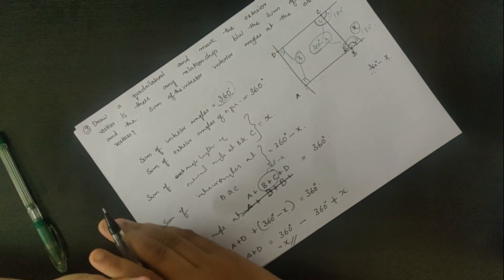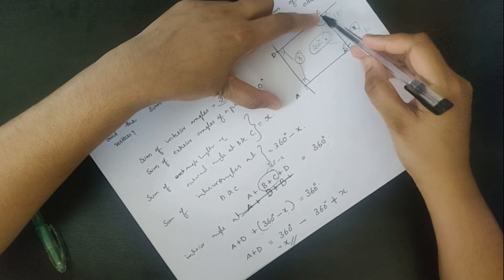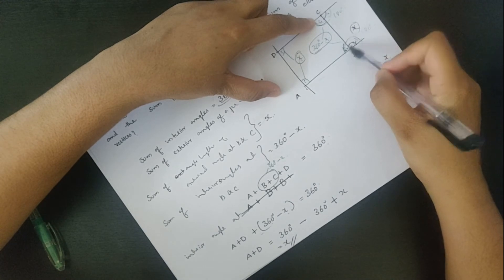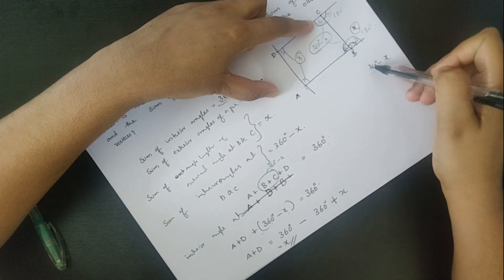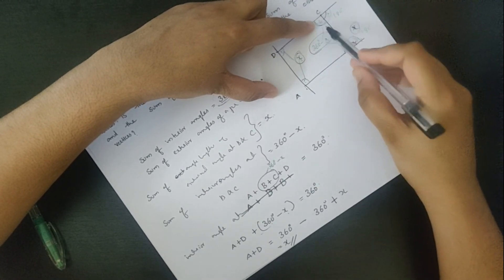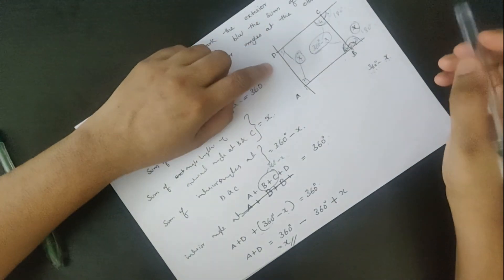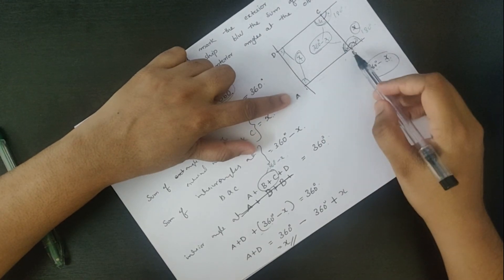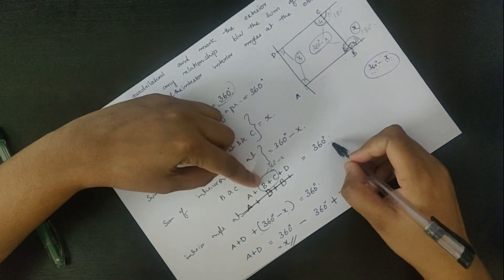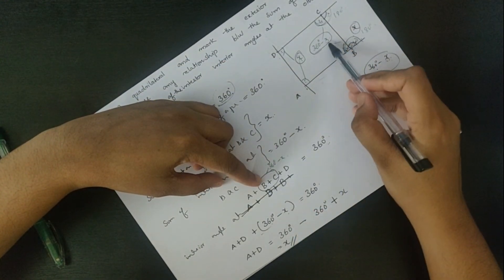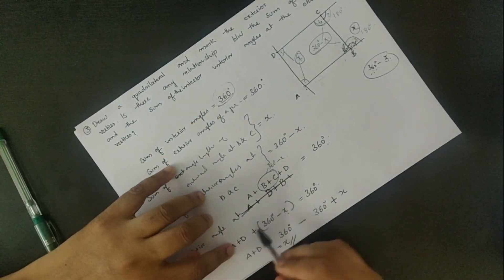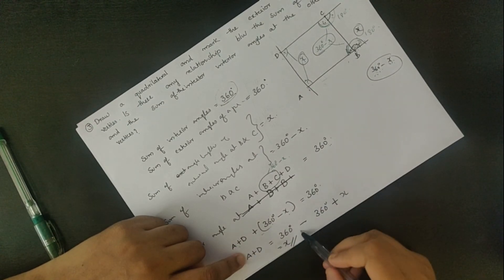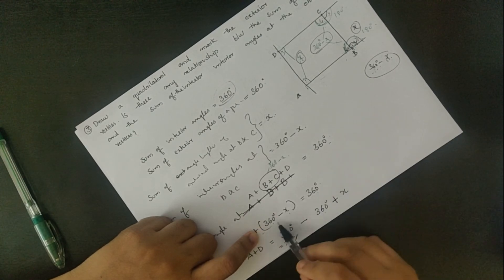We can use the concept that B and C are the two vertices whose exterior angles sum to x. And A plus D equals 360 degrees minus 360 degrees minus x plus x.